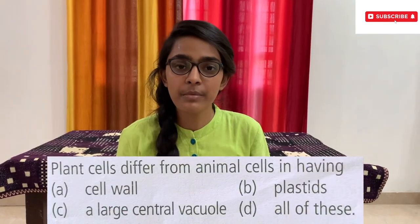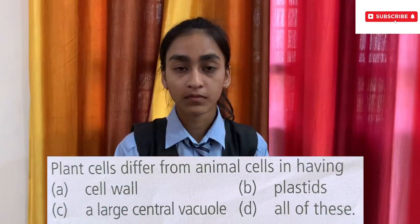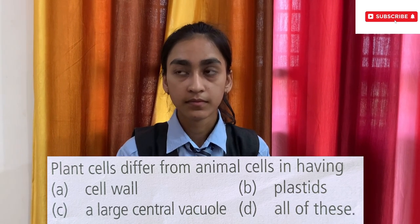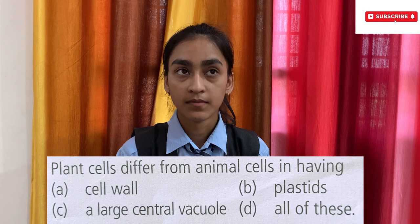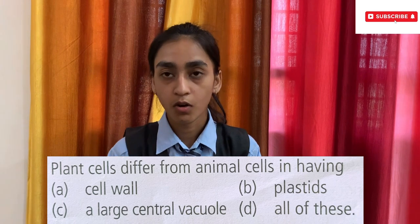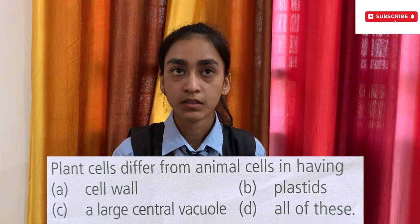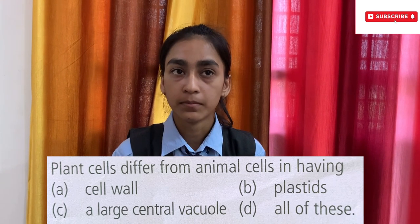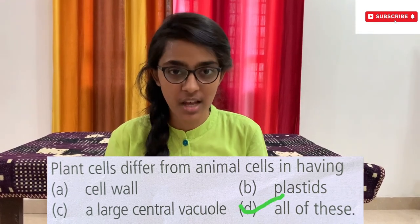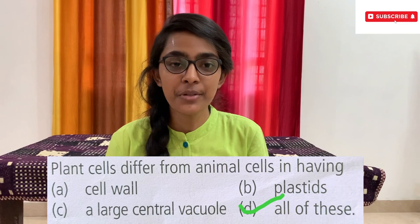The next question goes to Sejal. Plant cells differ from animal cells in having — options: A) Cell wall, B) Plastids, C) A large central vacuole, D) All of these. Option D, all of these. Are you sure? Option D, all of these, is the correct answer. Give her a huge round of applause!